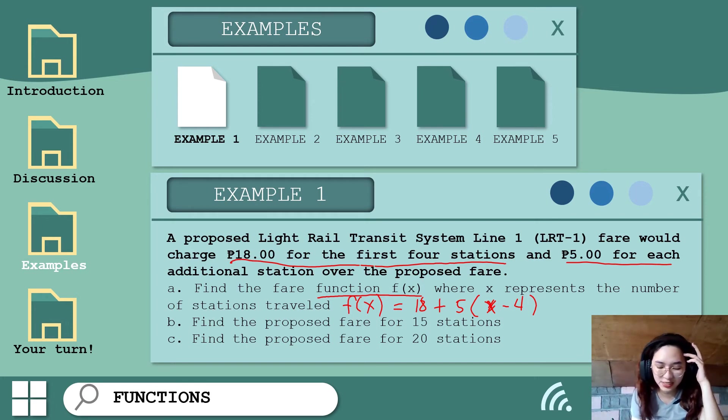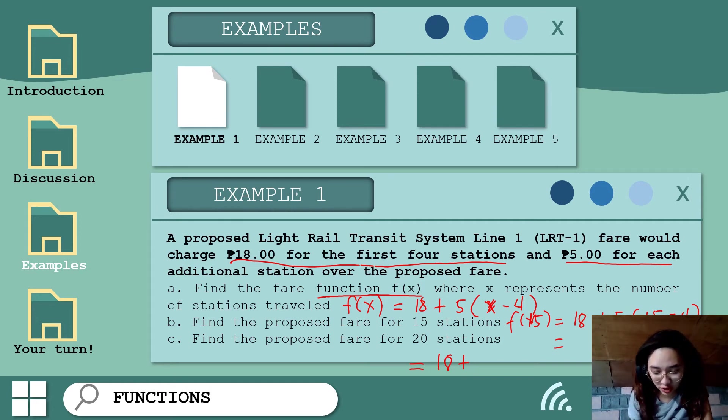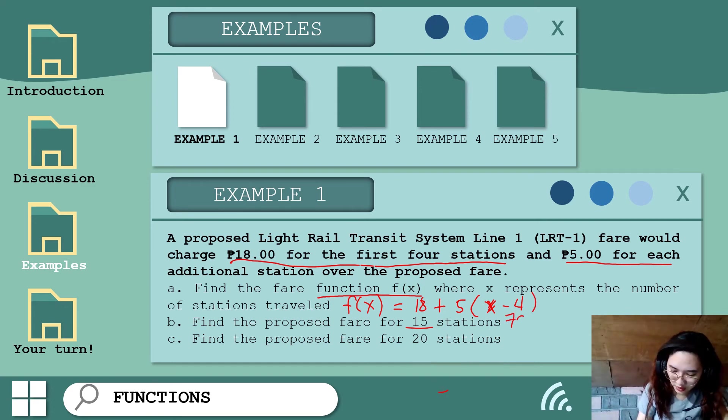Let's find the proposed fare for 15 stations. If 15 stations, how much is the fare? F(15) = 18 + 5(15 - 4). First, compute how many stations are additional after four stations. 15 minus 4 gives us 11 stations. So 11 stations times 5 pesos gives us 55 pesos. Then plus 18, the total fare is 73 pesos for 15 stations. How about for 20 stations? We have 18 + 5(20 - 4). That's 18 pesos plus 20 minus 4 equals 16 stations times 5 pesos, which is 80 pesos. So 18 plus 80 equals 98 pesos. For 20 stations, he will pay 98 pesos.